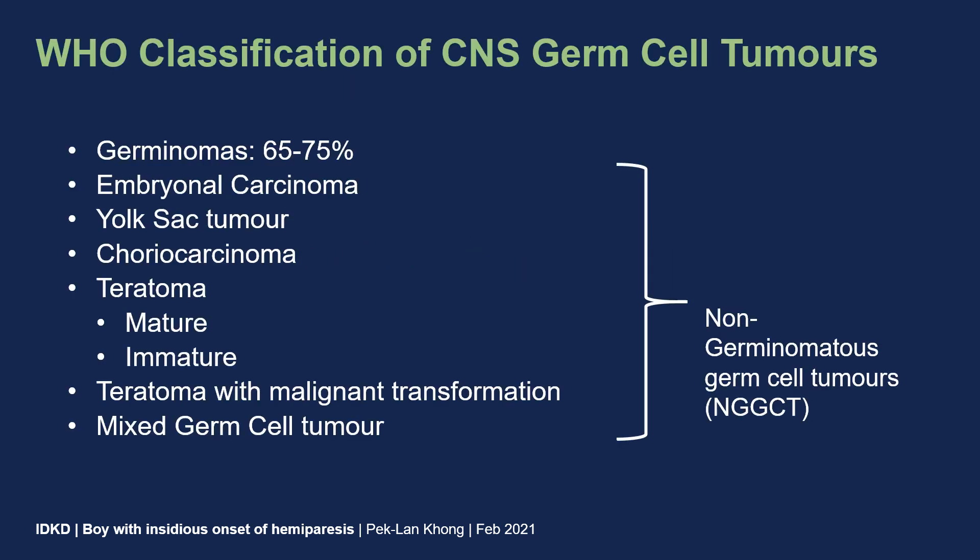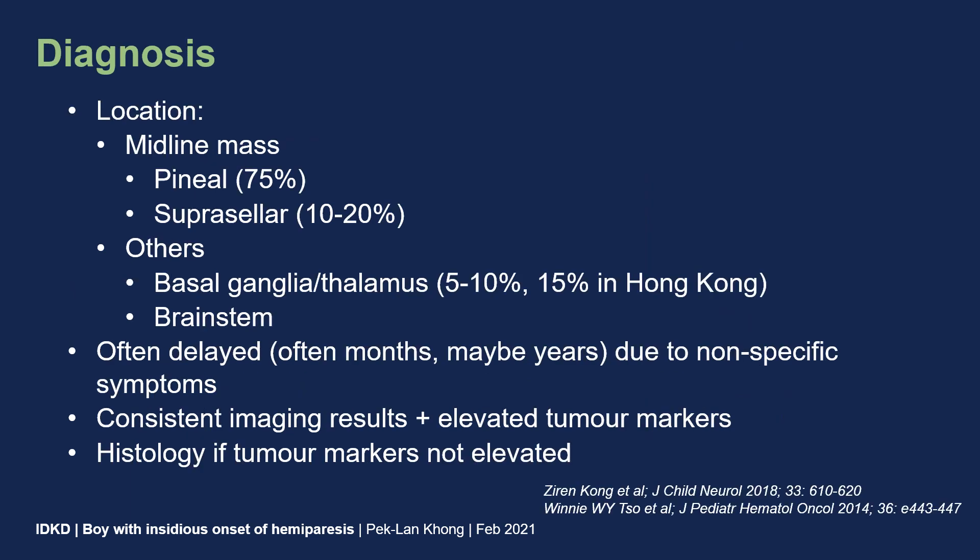The WHO classification of CNS germ cell tumors categorizes them into two groups: germinomas, which are the most common subtype, and non-germinomatous germ cell tumors comprising several subtypes. Germ cell tumors tend to be midline masses, and the most common locations are the pineal gland and the suprasellar region. There is a distinct subtype arising from the basal ganglia and thalamus, making up about 5 to 10 percent of intracranial germinomas, and these are more common in Asia — including China, Japan, and Korea — compared to the West.